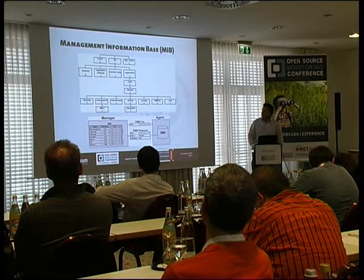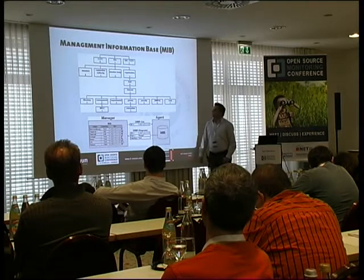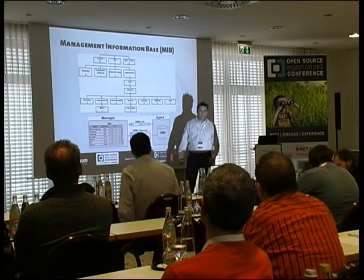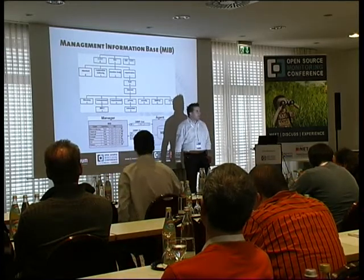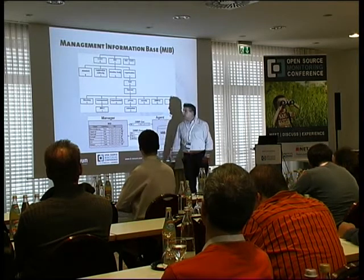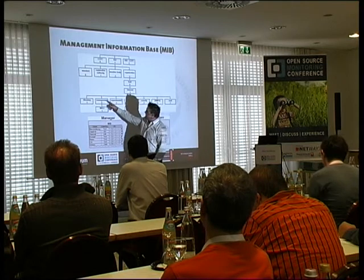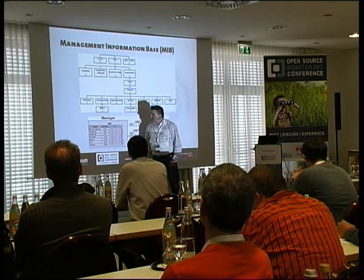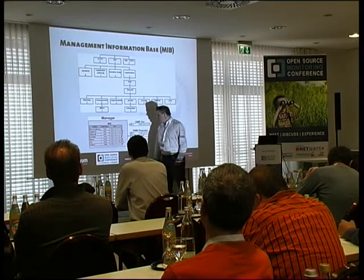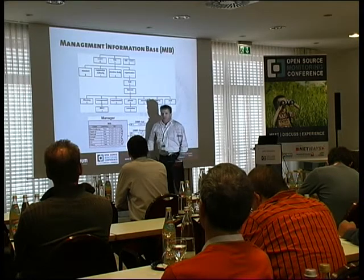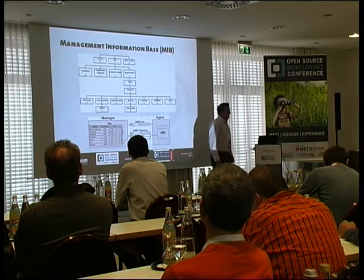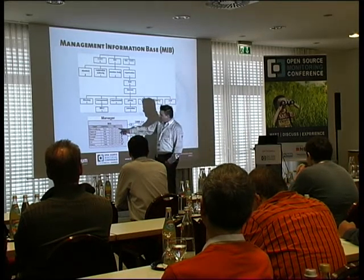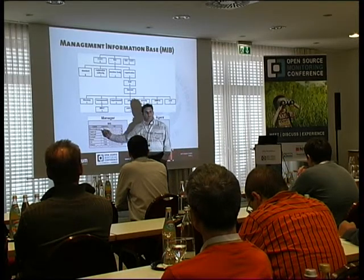Here you see the Management Information Base. SNMP is organized as a tree. You see the private MIB where vendors can put information about things like fans and status information. And you see the other part — MIB-2 — where you have information like the system description, routing information, and so on. Here you see the OID — object identifier. Every value is identified by one object ID and you can gather it. As an example, under this OID you will get the description of the system.